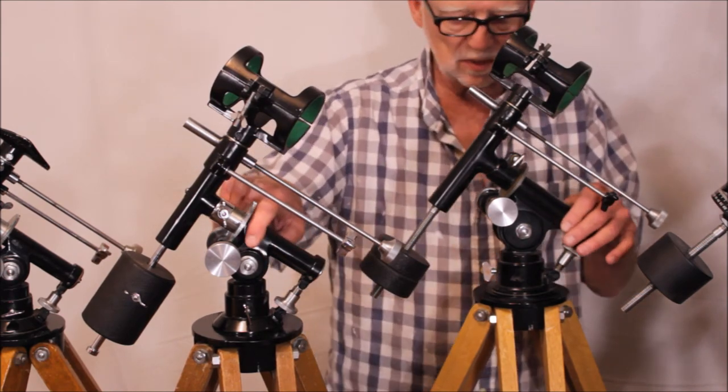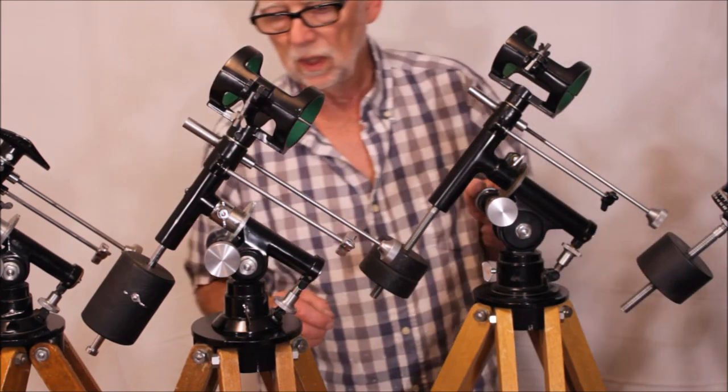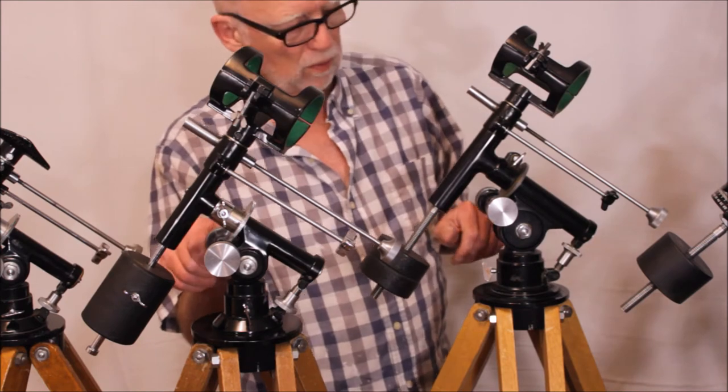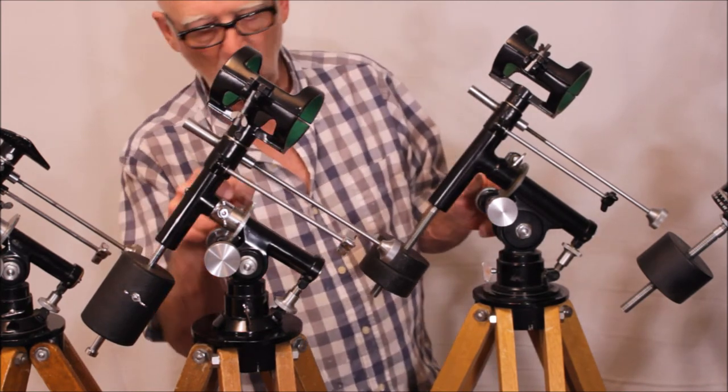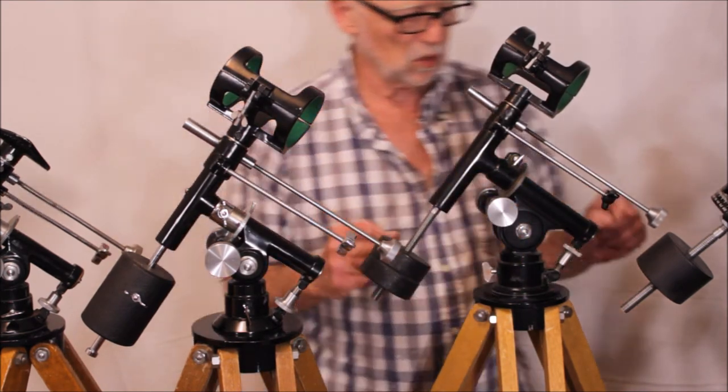But the main thing is look at the size of the casting. This casting here is considerably beefier and I'm pretty sure that the worm gear itself is actually bigger. The worm wheel may be the same size but the worm gear itself I do believe is bigger on this one.